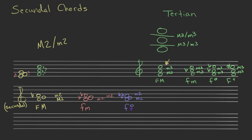The last one is F augmented secundal: a major second followed by another major second. F to G is a major second, and G to A is a major second, giving you F augmented. This one sounds like the first three notes of the major scale, so you might actually like this chord a lot more than it sounds at first.